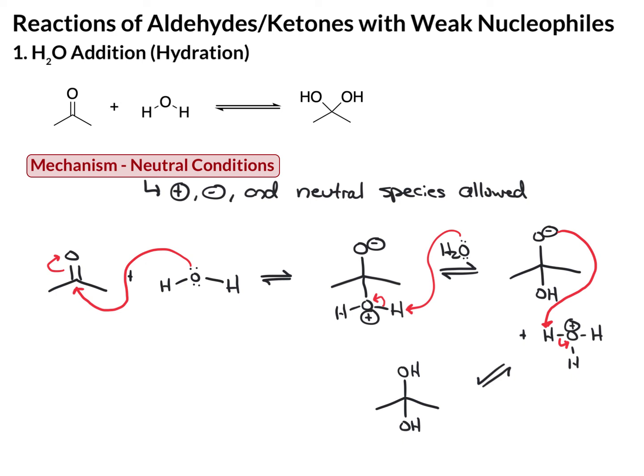Sometimes we'll take a little bit of a shortcut here and just draw a curved arrow from this negative charge to this proton, taking the proton from this oxygen to this oxygen and going directly to the product. Officially, it's going to be the two-step process, but the shortcut's fine as well.